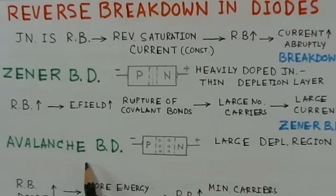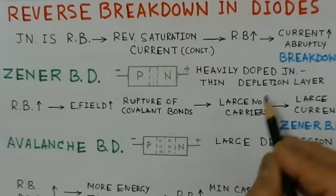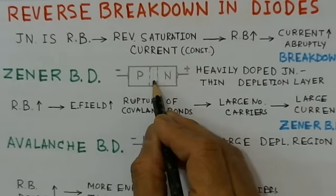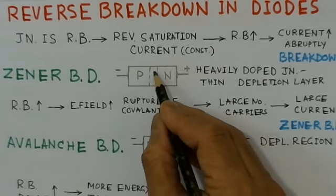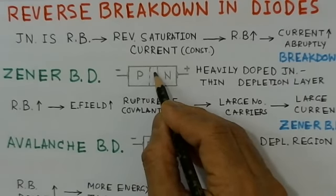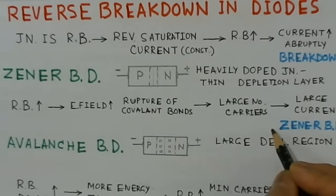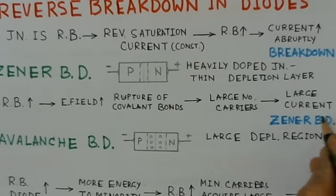For the Zener diode, the P and N regions are very heavily doped, so the corresponding depletion layer is a very thin layer. When we apply a reverse bias and increase it, the electric field generated across this thin junction is very large. The electric field increases further, and rupture of covalent bonds takes place. The crystal ions have their covalent bonds broken, generating a large number of carriers.